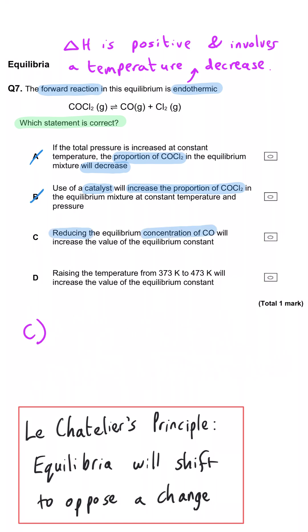Reducing the equilibrium concentration of CO will increase the value of the equilibrium constant. No, this isn't correct. Only changing the temperature will have an effect on the value for the equilibrium constant.